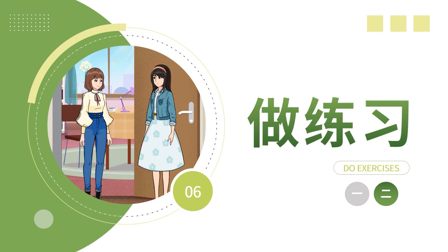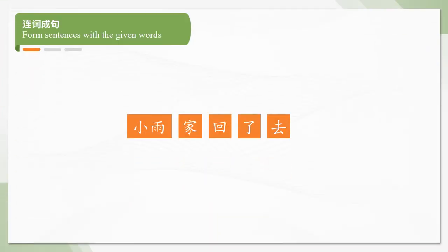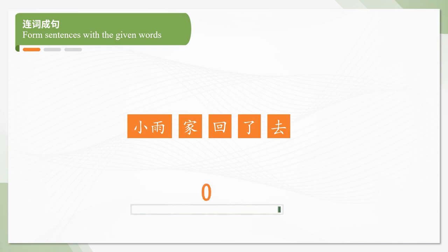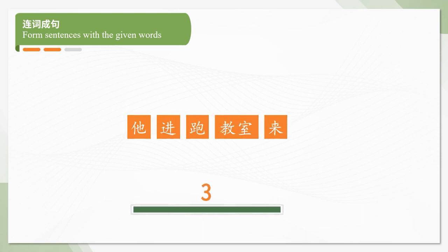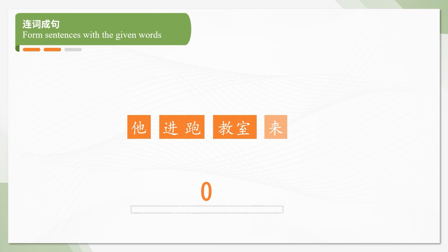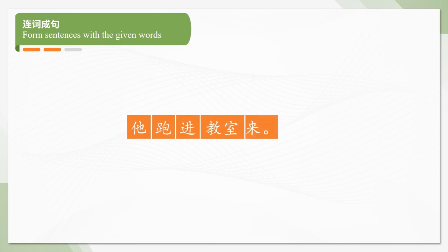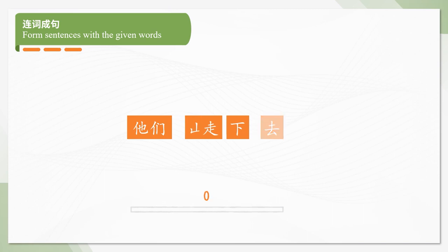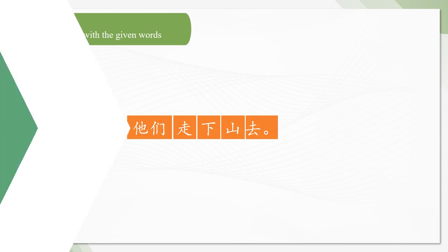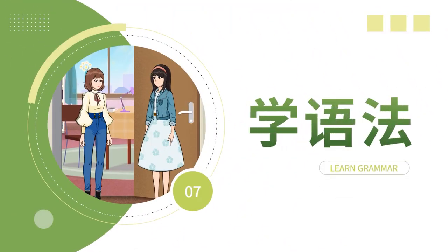Now, let's do some exercises. Form sentences with the given words. 小雨回家去了。他跑进教室来。他们走下山去。